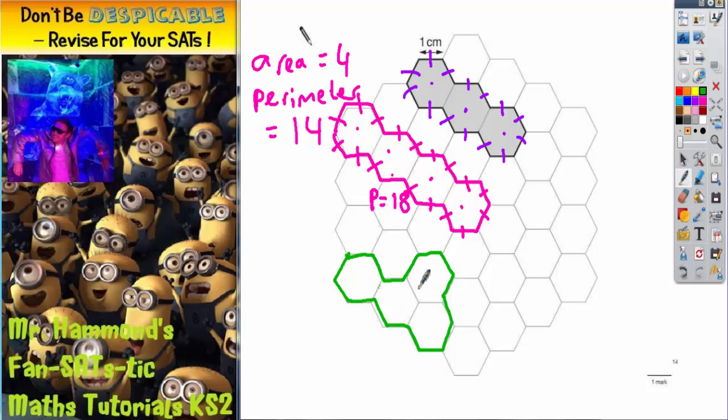Again, the area is going to be 4: 1, 2, 3, 4. Let's look at the perimeter: 1, 2, 3, 4, 5, 6, 7, 8, 9, 10, 11, 12, 13, 14, 15. So that has a perimeter of 16 and that's still too long. We're looking for a perimeter of 14.